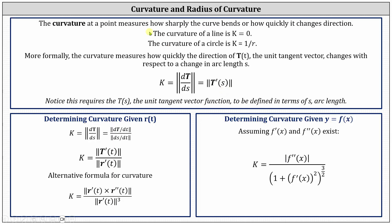The curvature at a point measures how sharply the curve bends or how quickly it changes direction. The more sharply a curve bends or the more quickly it changes direction, the larger the value of the curvature. The curvature of a line equals zero, and the curvature of a circle is equal to one divided by the radius of the circle.